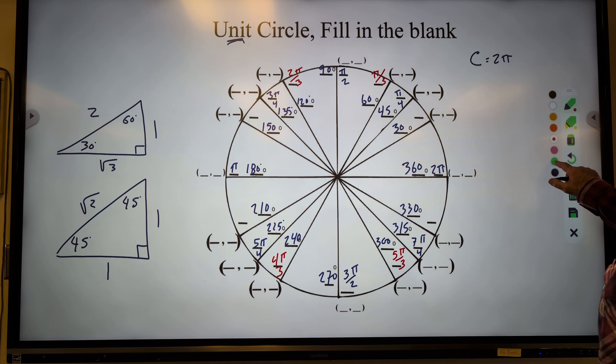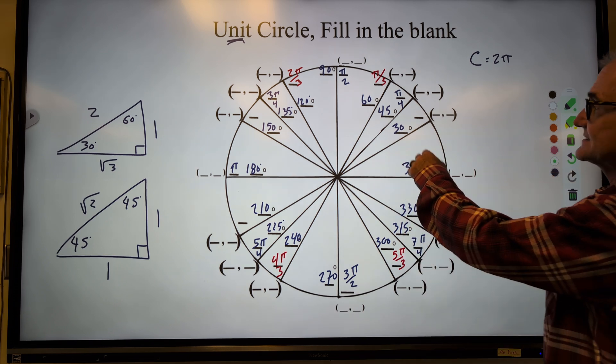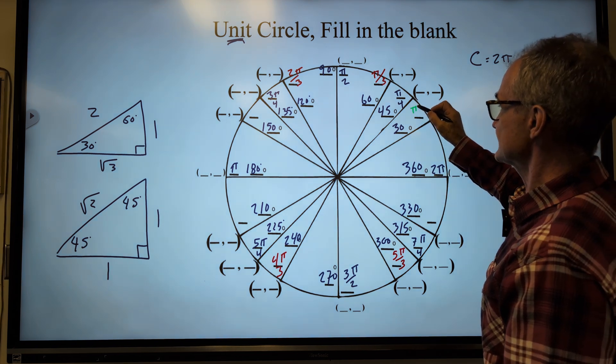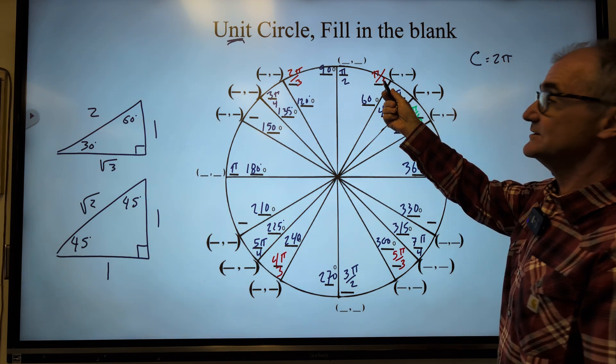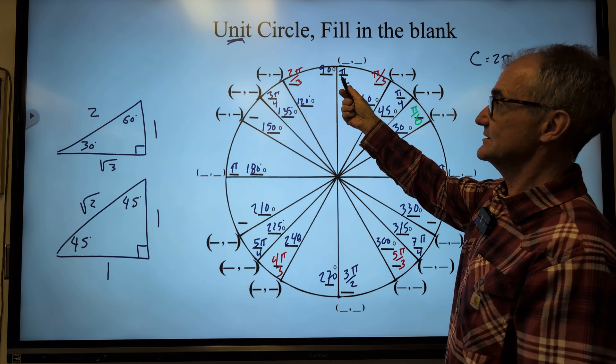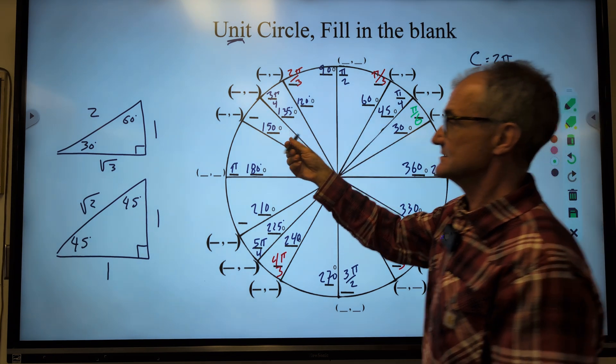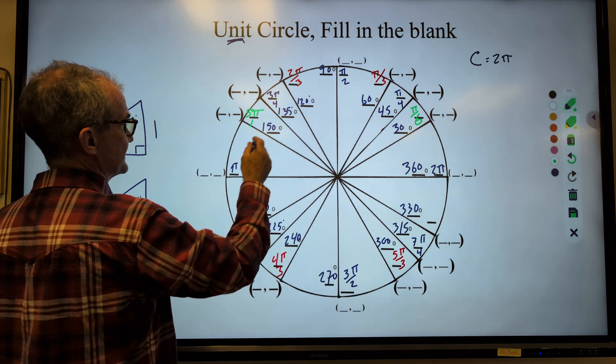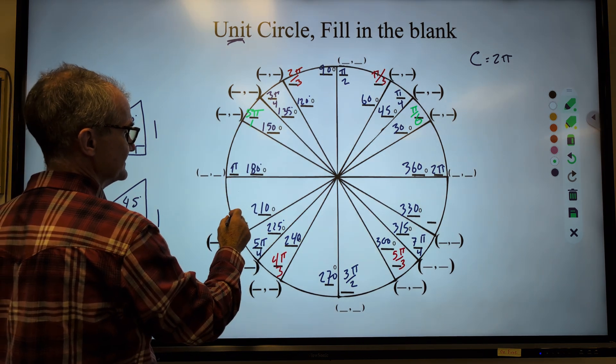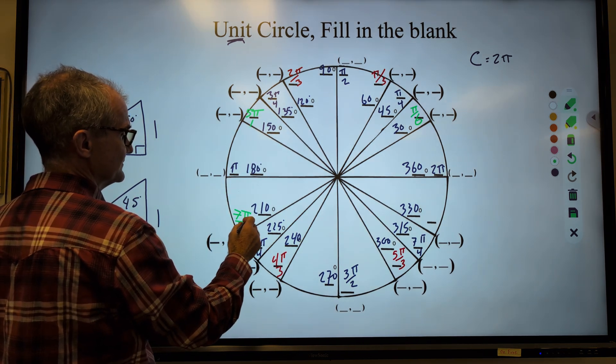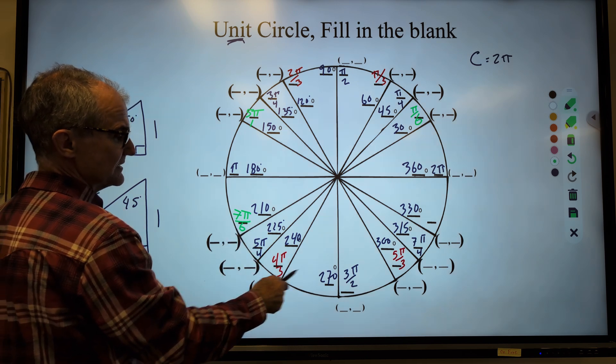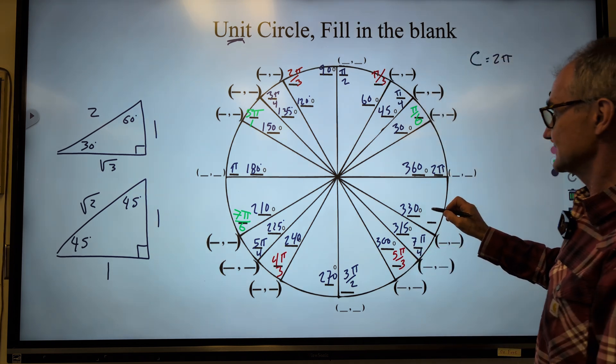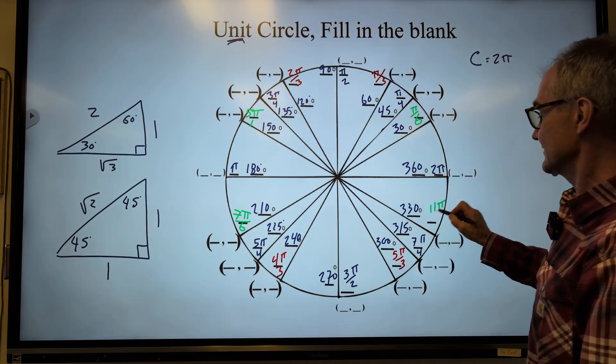Next after that I'm going to do my 6. 30 is 1 sixth to 180. So this is 1 sixth. This is 2 sixth. 3 sixths reduced. 4 sixths. This is going to be 5 sixths. 6 sixths. 7 pi over 6. 8 pi over 6. 9 pi over 6. 10 pi over 6. And 11 pi over 6.